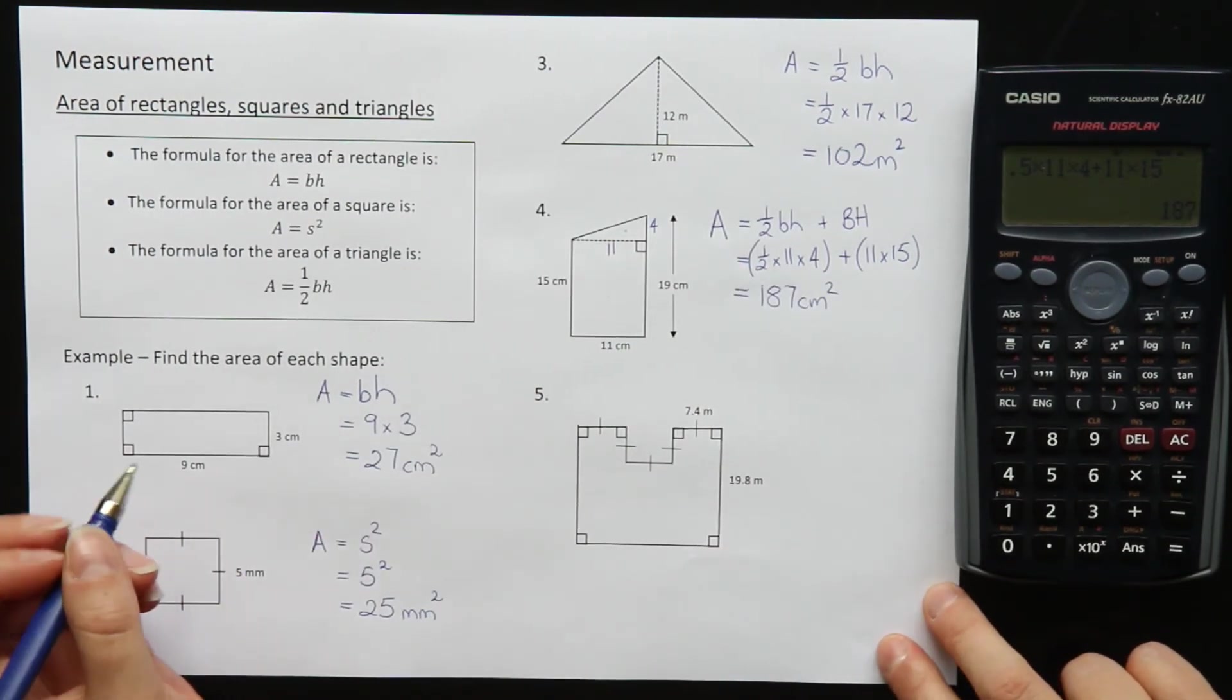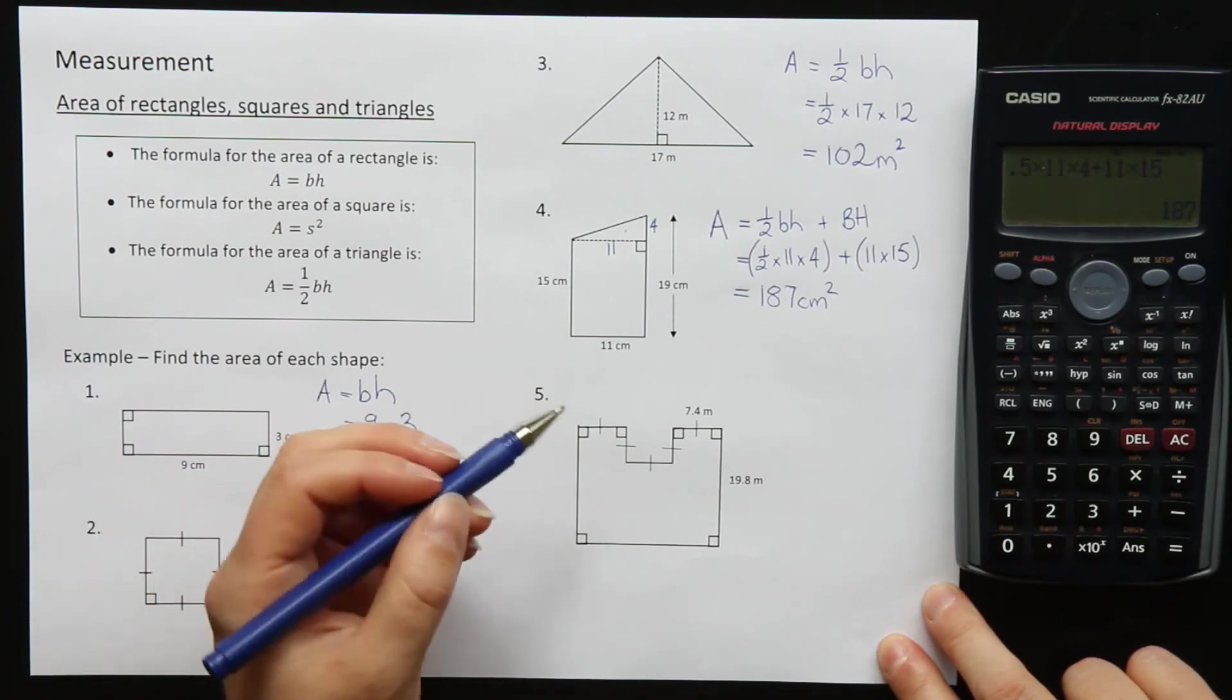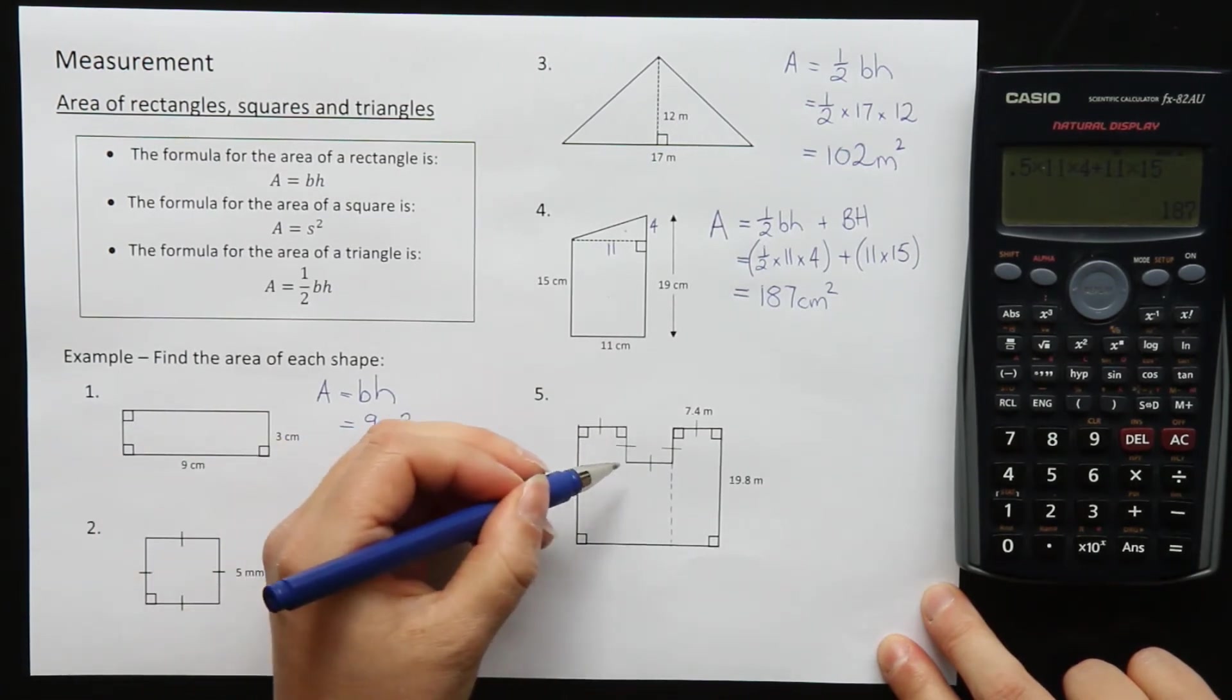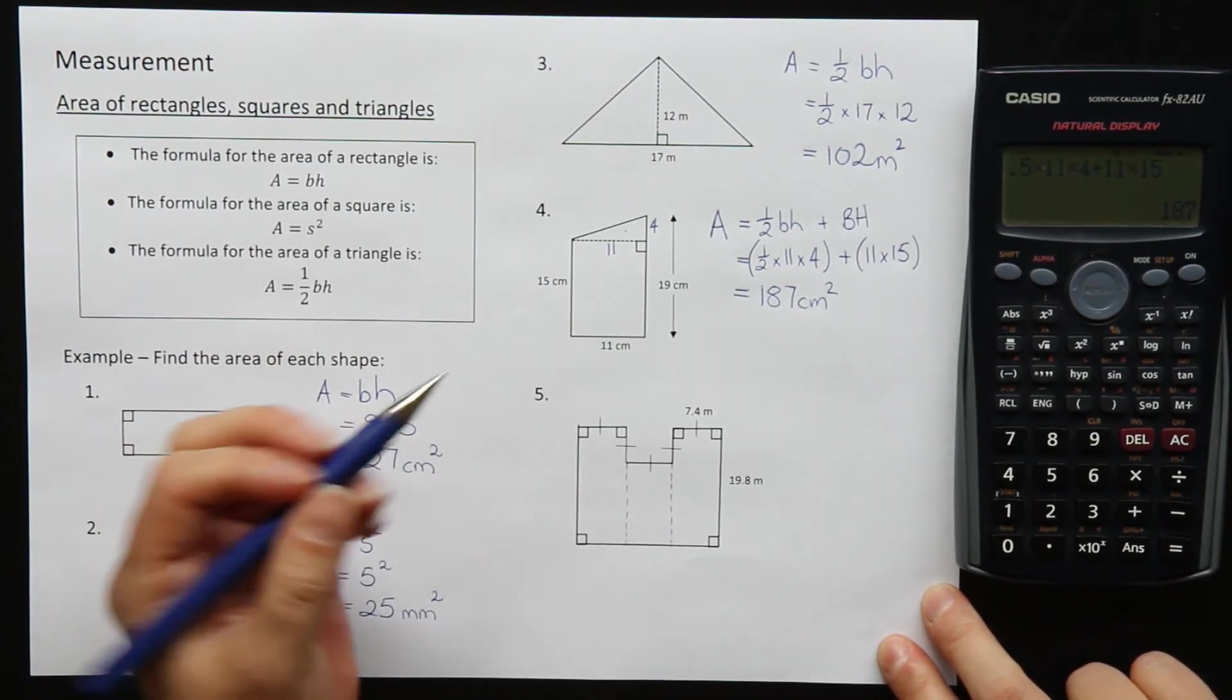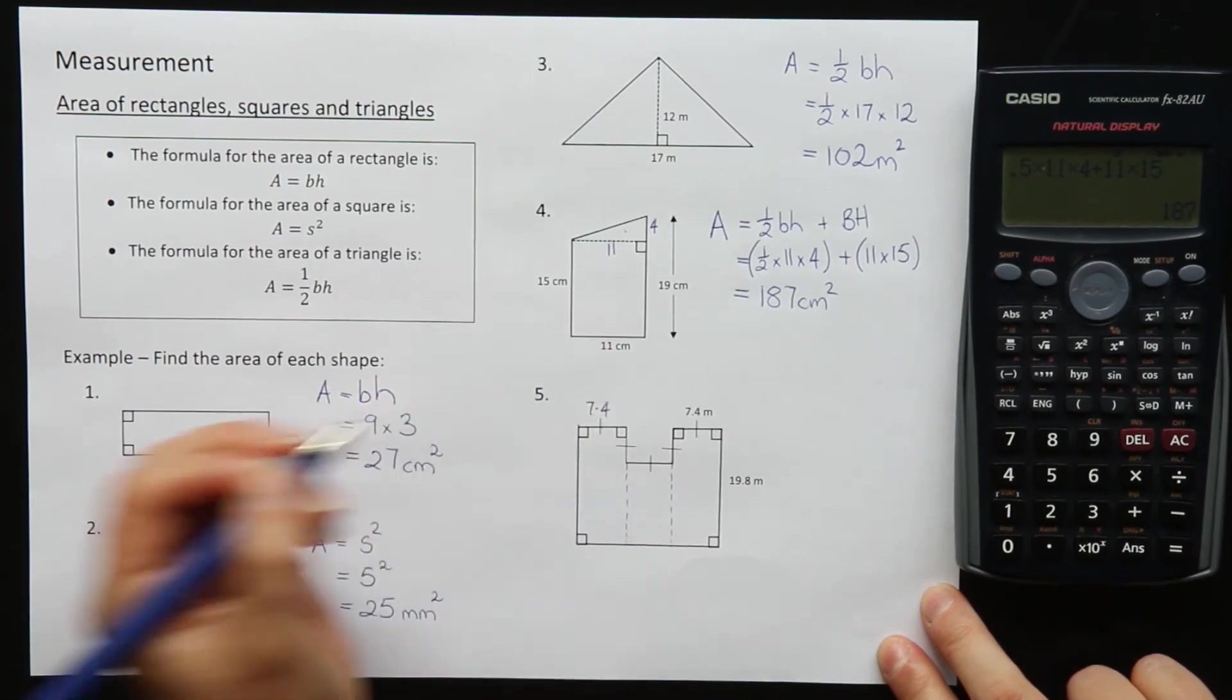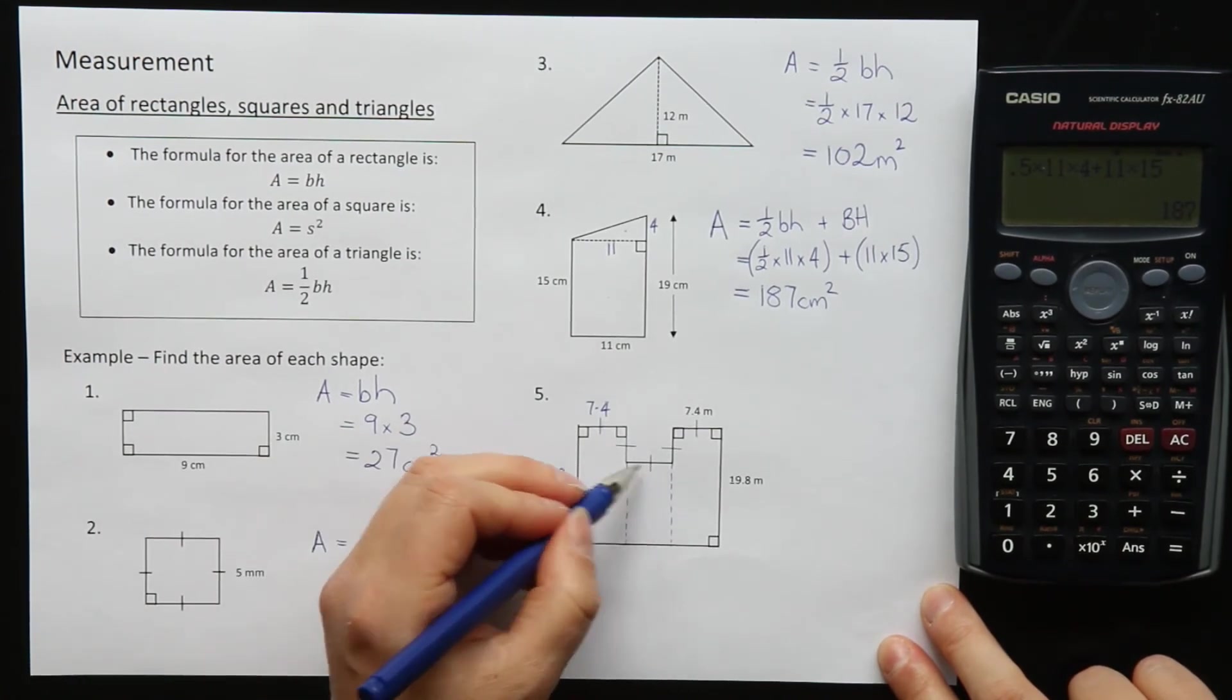Let's try this again for question five. What shapes do I have here? We need to have a bit of a look at this. I could cut this shape. I'm going to draw some lines to cut it. I could cut it down here and I could cut it down here. I'm actually cutting into three shapes. Now the good news is that this rectangle and this rectangle are actually the same because this line here is 7.4.